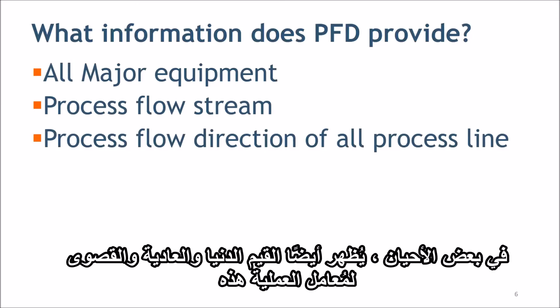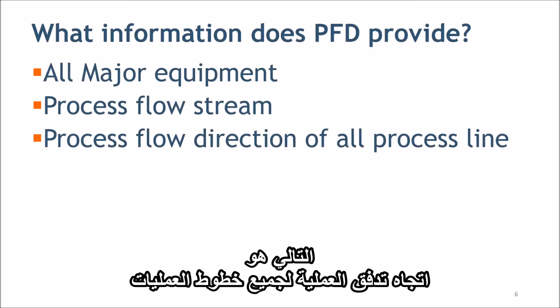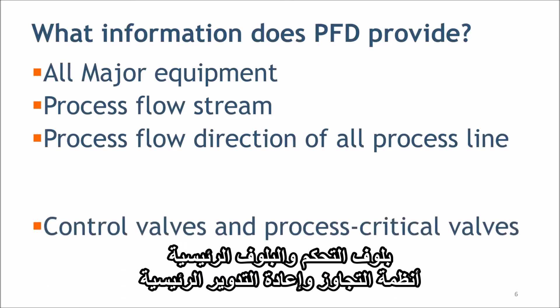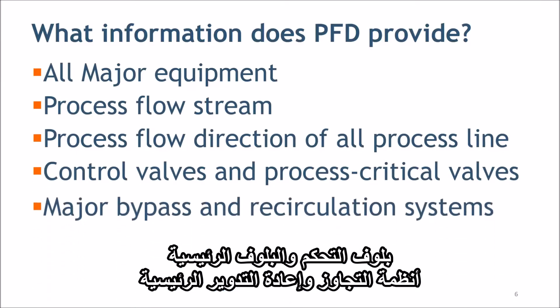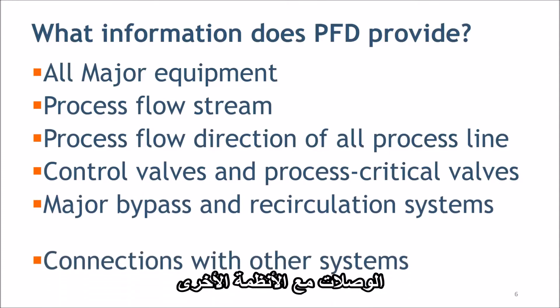Sometimes it also shows minimum, normal, and maximum values of these process parameters. Next is process flow direction of all process lines, control valves and process critical valves, major bypass and recirculation systems, and connections with other systems.